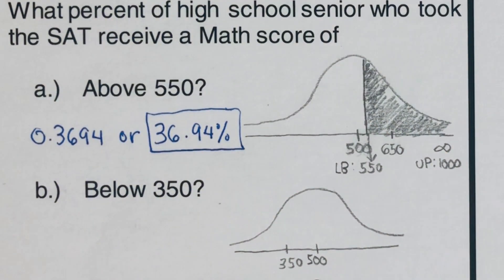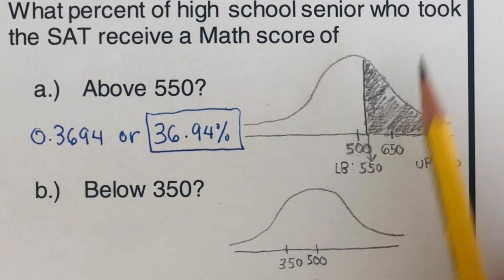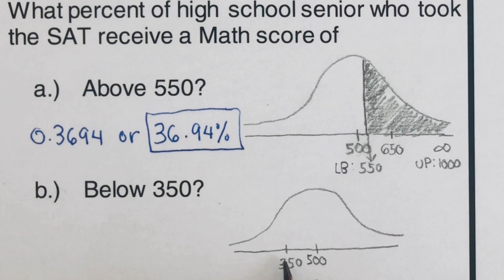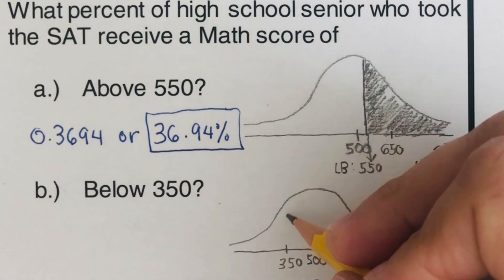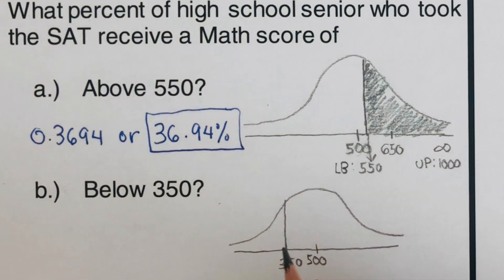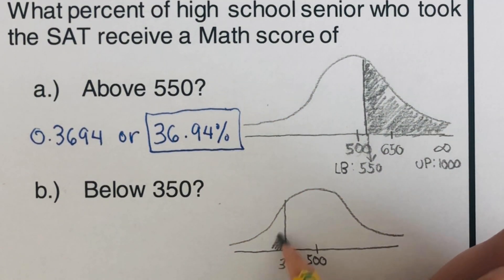I've set up the normal curve again. Our mean is 500, and one standard deviation below the mean is 350 — since 500 minus 150 equals 350. We're interested in determining the area under this curve below 350.